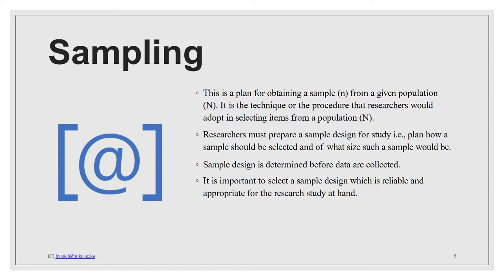Just as we denote the mean with X-bar, standard deviation with S, and variance with lambda, sampling becomes a process in which you obtain a sample from a given population — it becomes a technique. The research design will tell you what type of technique you are going to use: probability sampling methods or non-probability sampling methods.